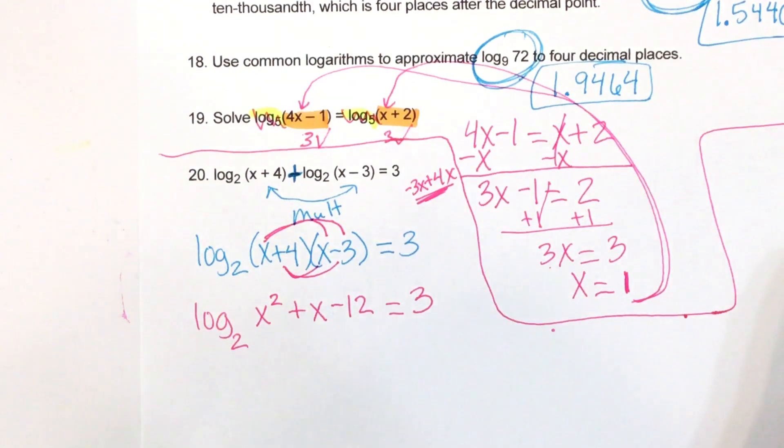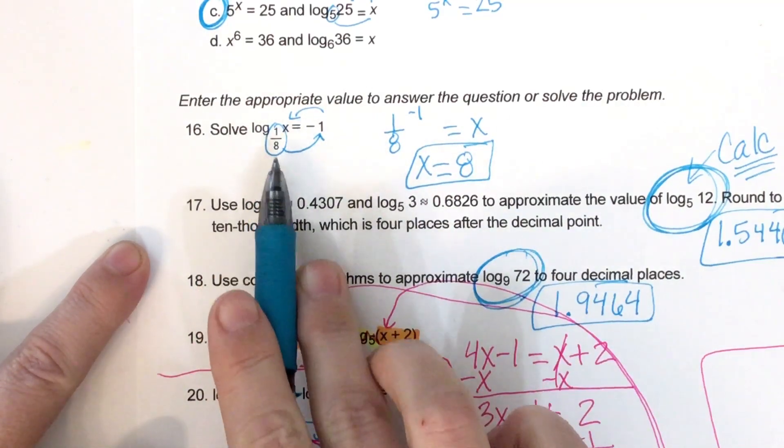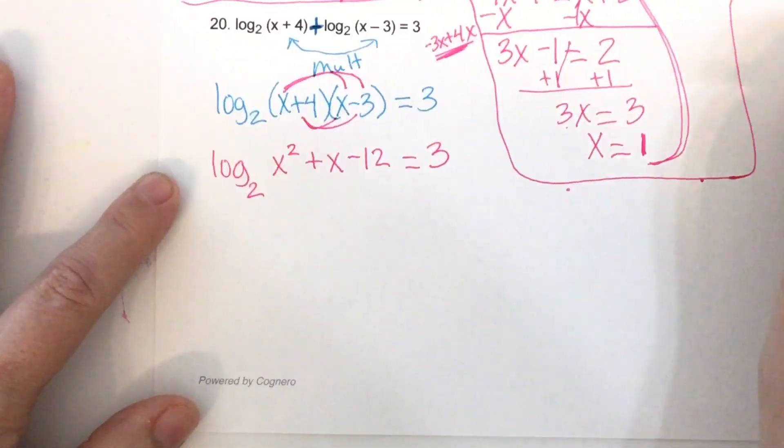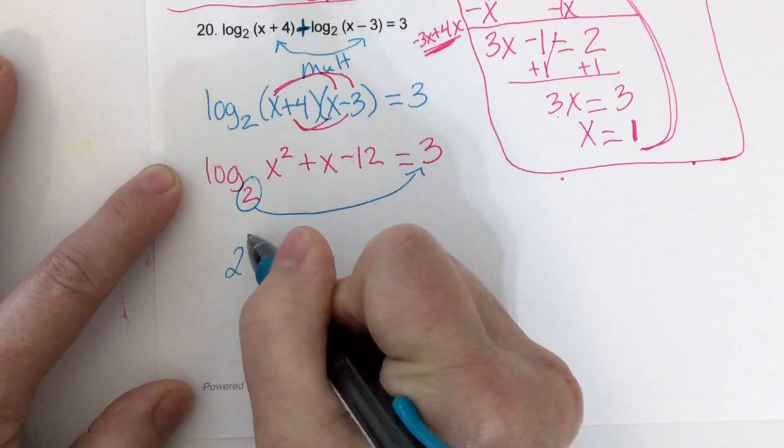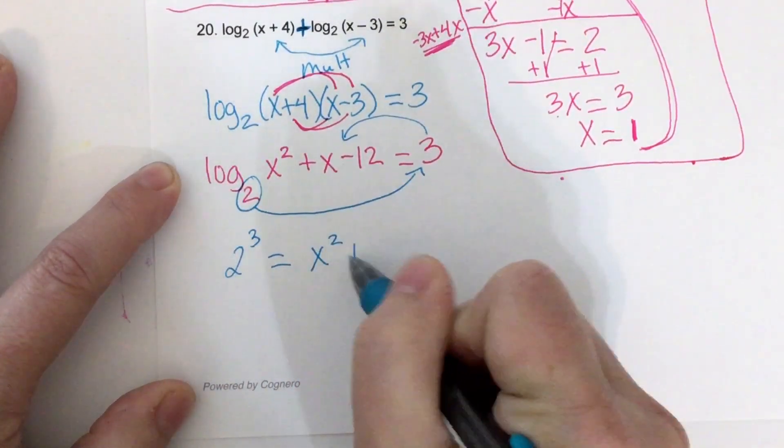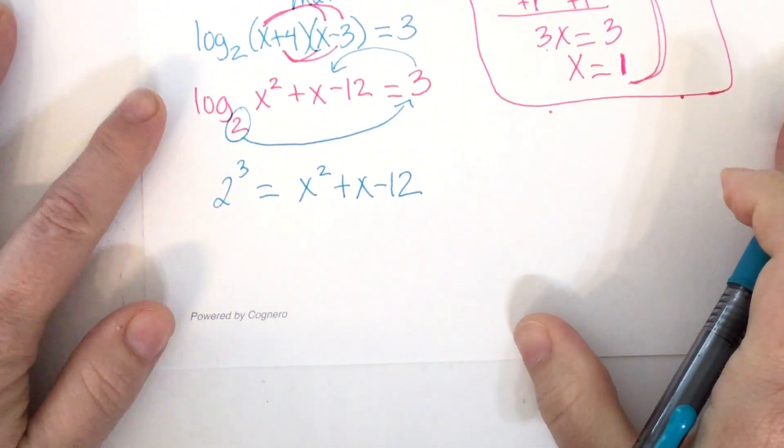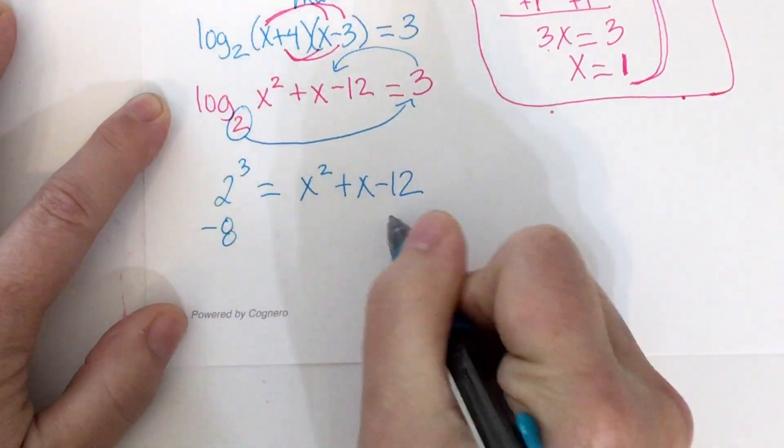Okay. So I've got log base 2 of x squared plus x minus 12 equals 3. So once you see log one time, you put it in exponential form. Like this one up here, we had log one time. So base raised to power equals x. So this is the same sort of thing here. So the base raised to the third power equals x squared plus x minus 12. Okay. 2 cubed is 8.